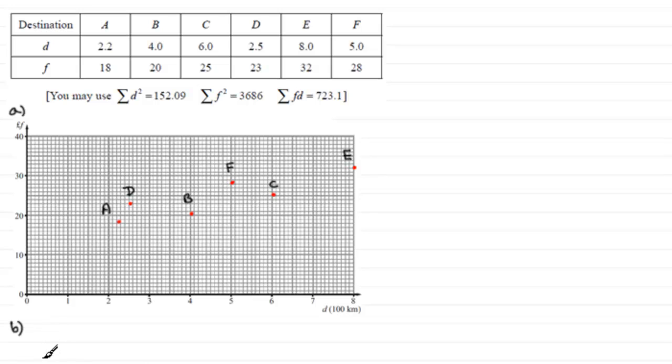So in order to answer that, I'd just say that the points lie close to a straight line. So let's just write that in. Points lie close to a straight line. And I think that should justify why a linear regression model would be appropriate.